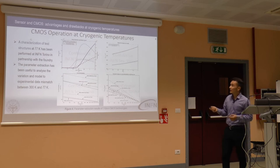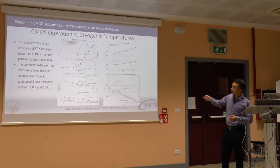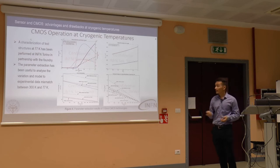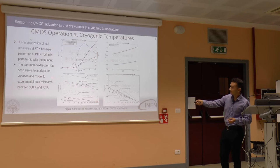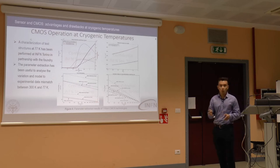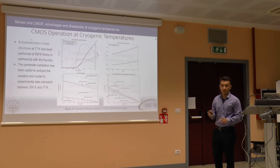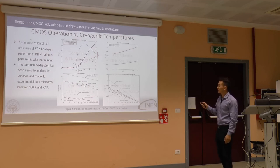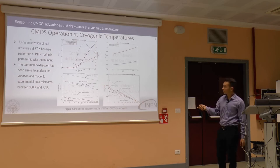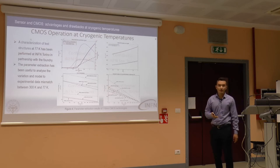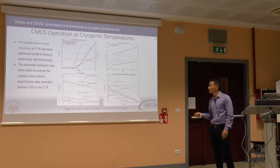Another feature of CMOS operation at cryogenic temperatures is the increment of transistor transconductance. We can see that the transconductance at 77 Kelvin is more than twice that at room temperature. This is due to the fact that the low-field mobility also increases from 300 Kelvin to 77 Kelvin by roughly two to three times, depending on the technology. The threshold voltage increment, depending on the technology, could be 100 to 200 millivolts.